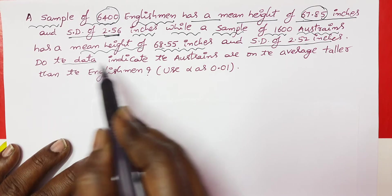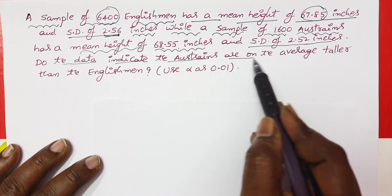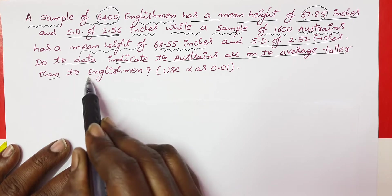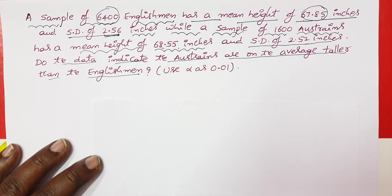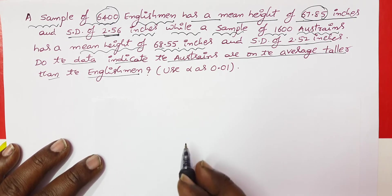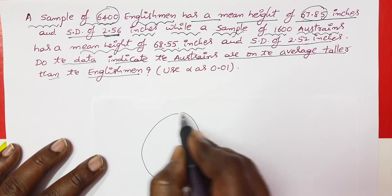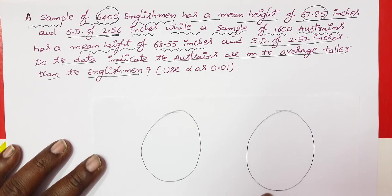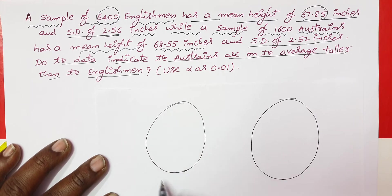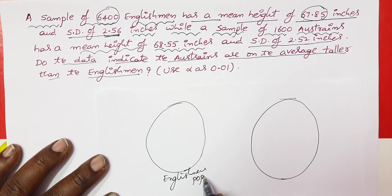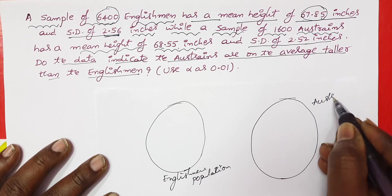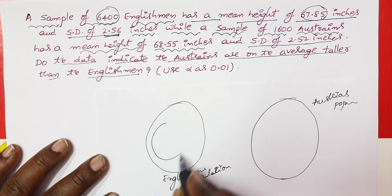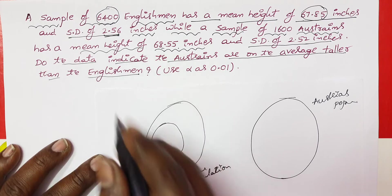Do the data indicate that Australians are on the average taller than Englishmen? Here you have two populations. Both samples are large — 6400 and 1600 are both greater than 30.